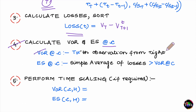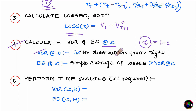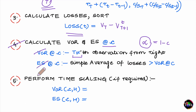For VaR, start from the extreme right of the sorted series of losses, move to the left, and stop at the point where you have accumulated a total probability mass of alpha (the level of significance, where alpha = 1 - C). This will be the T×alpha-th observation counted from the right. That observation is your VaR. To find Expected Shortfall, take all losses strictly greater than this VaR observation and compute their simple average.